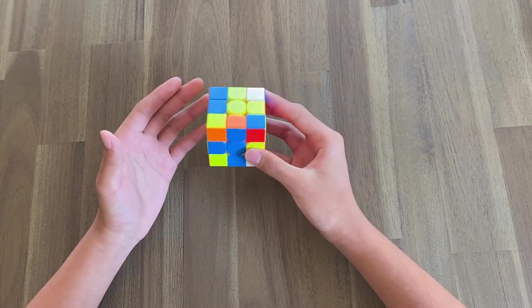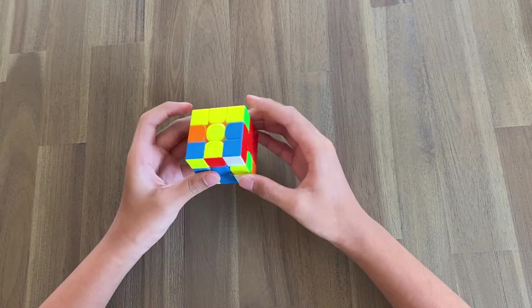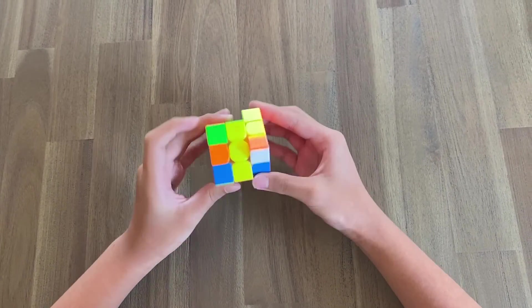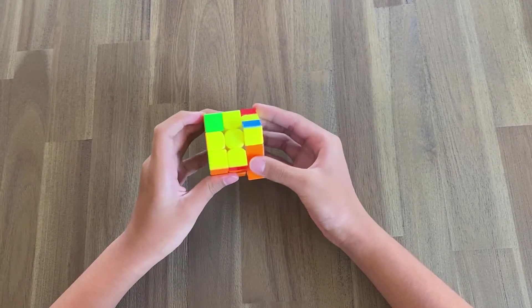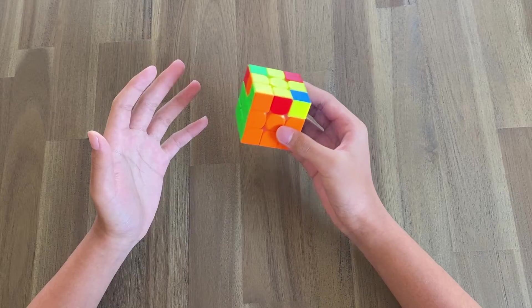Some of the more advanced cubers may know that look ahead is where you're already seeing the next pair as you're doing this pair. So you can do the pair very fast without having to worry about looking for the next pair after you've done the pair.